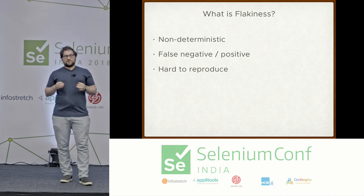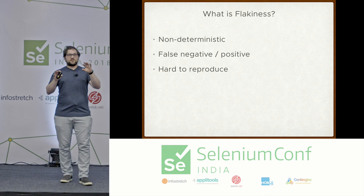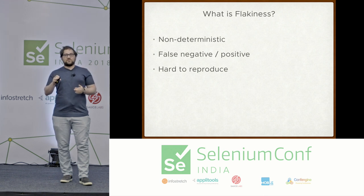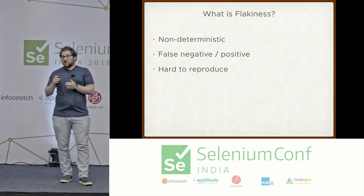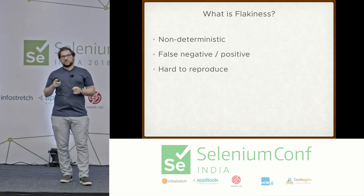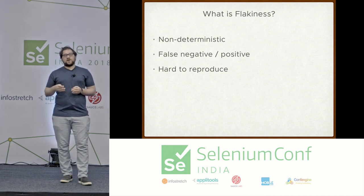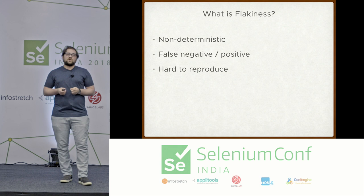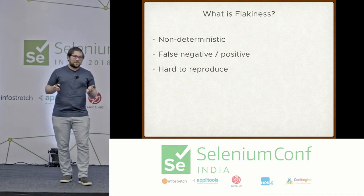Another thing when talking about flakiness is a false negative — when that one-out-of-ten test fails in your CI pipeline, you wonder: is something actually wrong with the application, or is something wrong with the test code itself? Most of the time it's probably the test code — that's a false negative. There's also the inverse: a false positive, where your test passes but isn't actually eliciting the behavior you're trying to test. And flakiness is also associated with things that are hard to reproduce.